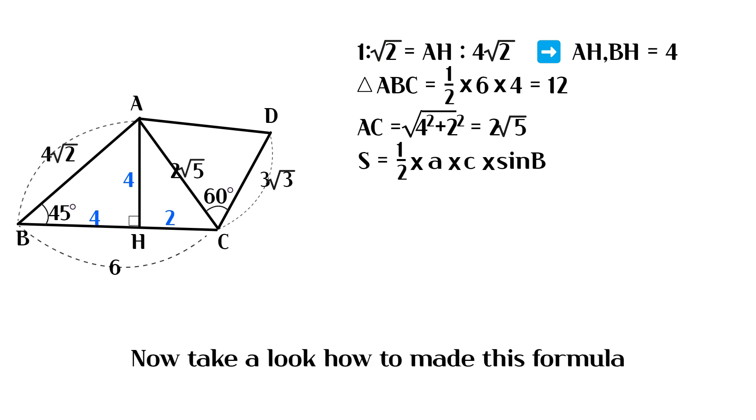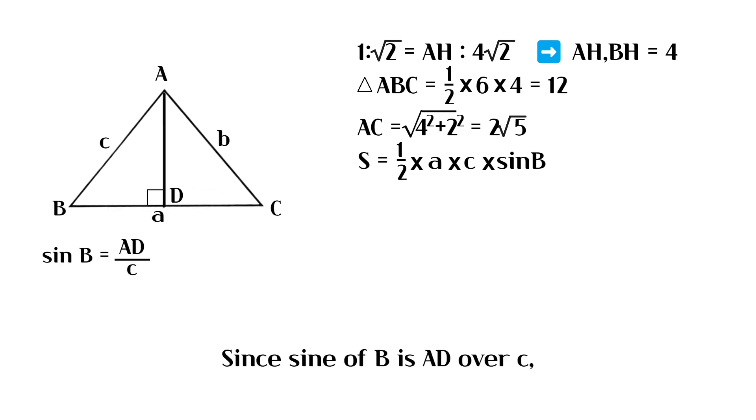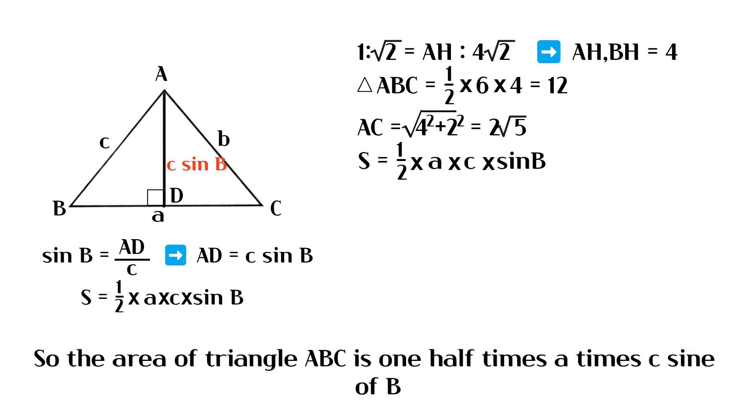Let's take a look how to make this formula. Since sine of B is AD over C, AD is equal to C times sine of B. So the area of triangle ABC is 1 half times A times C sine of B.